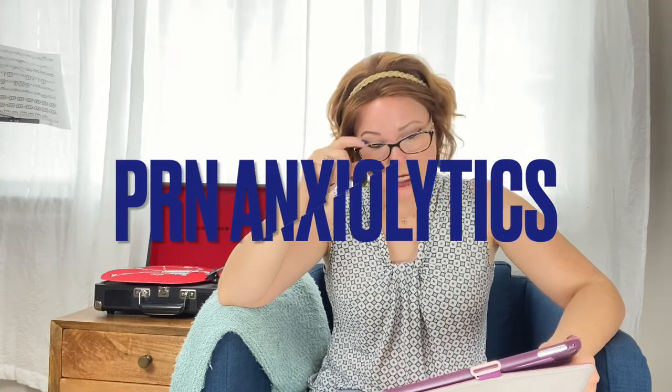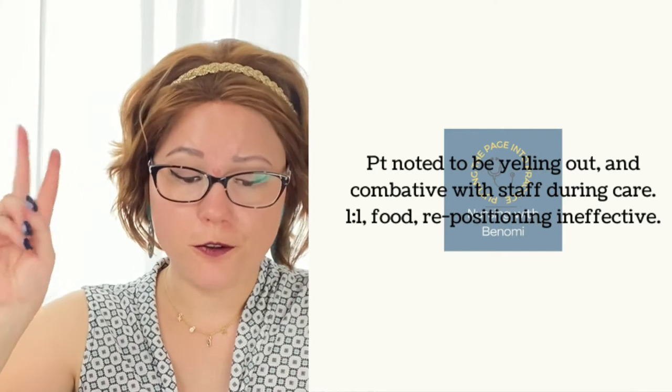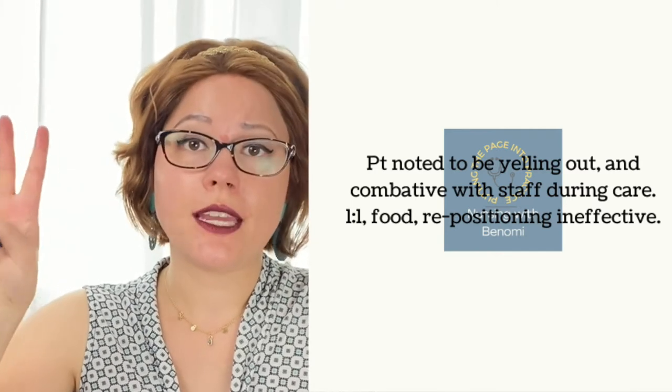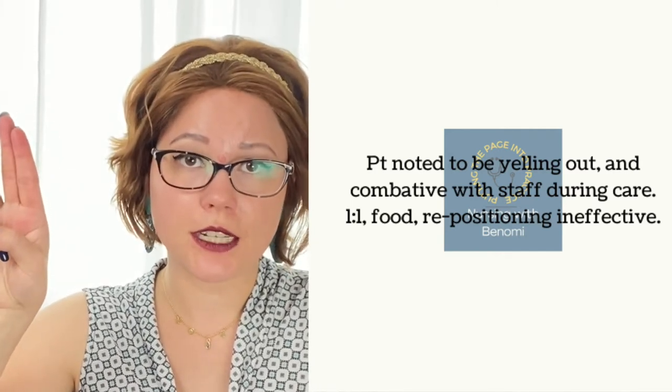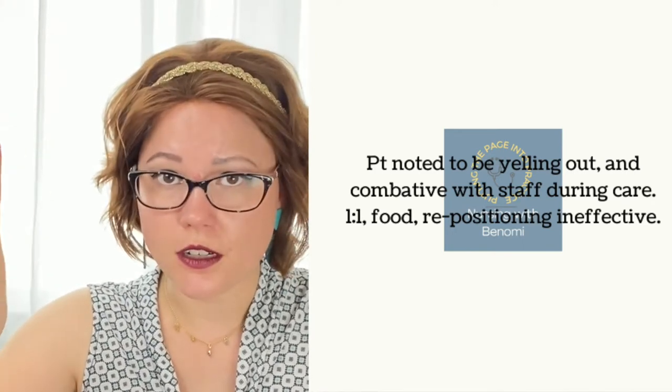PRN anxiety medication: whenever you're giving a PRN anxiolytic in the long-term care setting, you have to document three alternative measures that you tried before giving that pill. An example would be: patient noted to be yelling out and combative with staff during care. One-to-one, food, and repositioning were ineffective. So you've tried three things, whatever those three things are. If you tried them and it didn't work, then you give the medication.